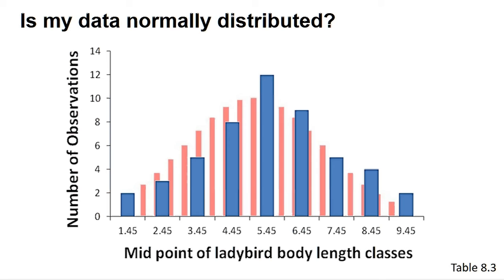However, many programs have several other tests to determine if your distribution could be normal, and in this screencast we will outline the use of the Shapiro-Wilk test, which is the most accurate test for small sample sizes. Again, a significant result indicates that your data is not normally distributed.